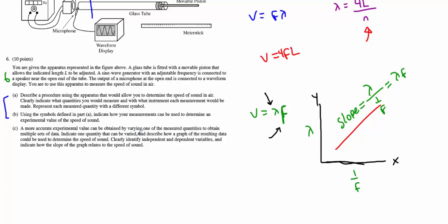Again, make sure you follow everything it says in here. Clearly identify your independent and your dependent variables, etc. Show how we're going to use the slope to represent the speed of sound. And that's your final four points.